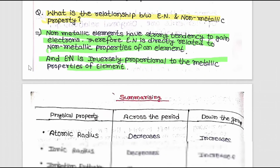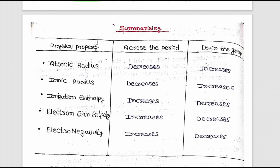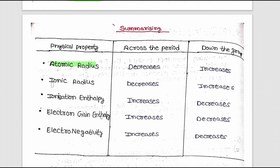In summary, the periodic properties covered are: atomic radius, ionic radius, ionization enthalpy, electron gain enthalpy, and electronegativity.